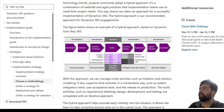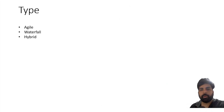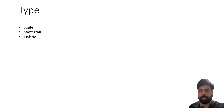In Hybrid methodology, some things follow a non-iterative approach while in specific areas, like the build phase, you follow an iterative approach. You pick up a small set of requirements, do analysis, design, development, and testing, then repeat the same process again. This combines Agile and Waterfall. In my experience, most of the time organizations follow a Hybrid methodology.